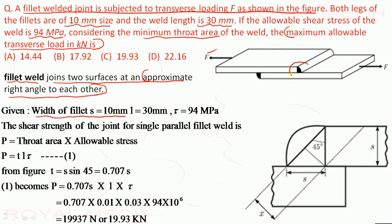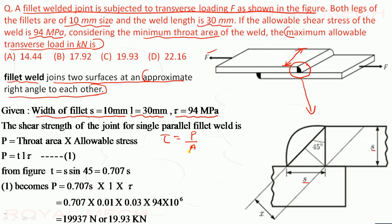The fillet welding may look like this. The width of the fillet S is equal to 10 mm and the length of the weld is 30 mm. The allowable shear stress is 94 MPa. The shear strength of the joint for a single parallel fillet weld is P equal to throat area multiplied by allowable shear stress, since shear stress equals force upon area.